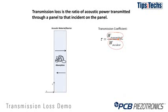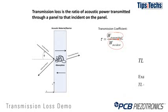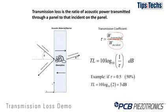Here you can see an example of that. Here's the incident sound wave, there's a reflected sound wave which for transmission loss we ignore, and then there's some amount of sound energy transmitted through that material. The transmission loss we typically specify in decibels, so we take 10 times the base-10 logarithm of 1 over the transmission coefficient. For example, if your transmission coefficient is 50% or 0.5, your transmission loss would be 3 dB.